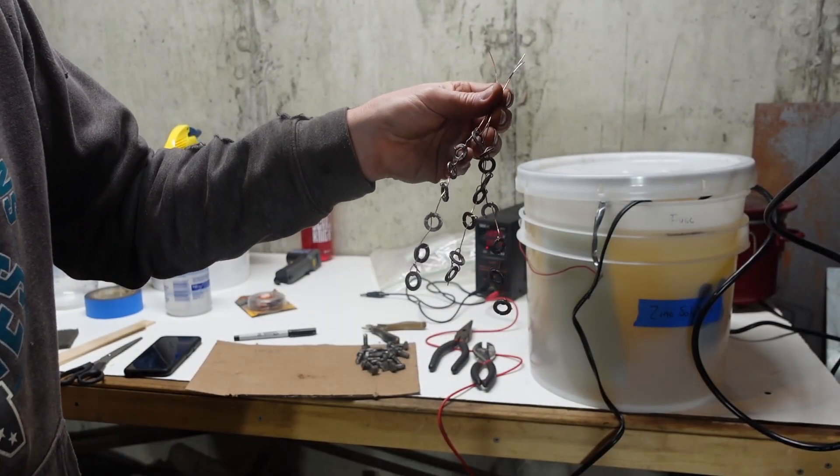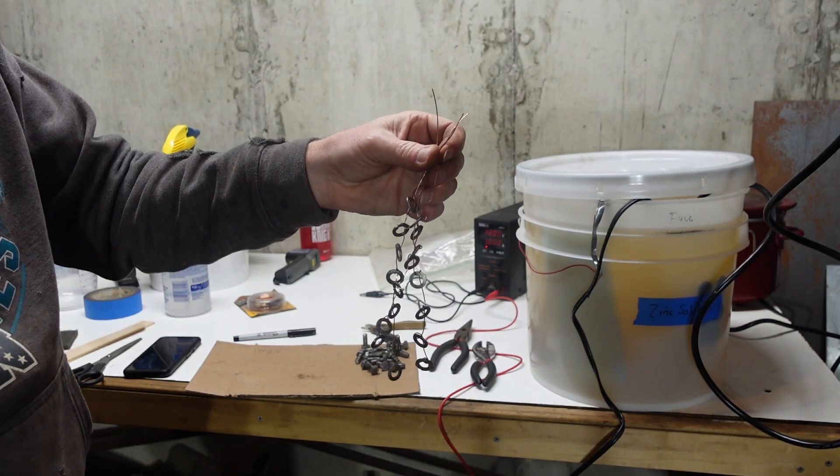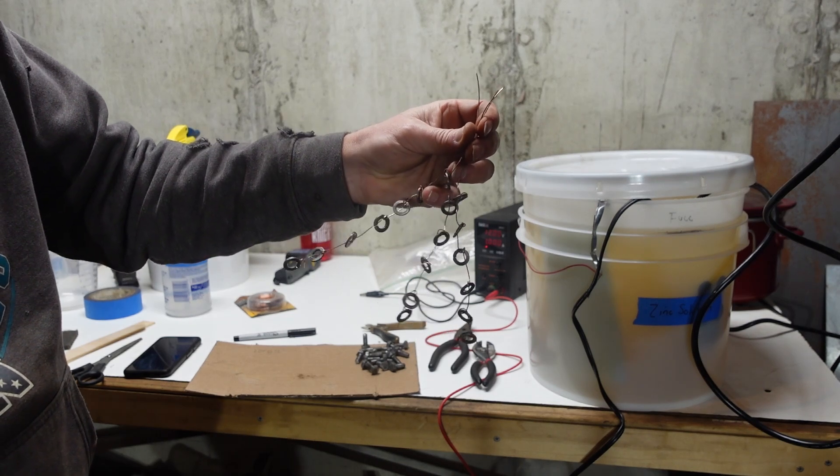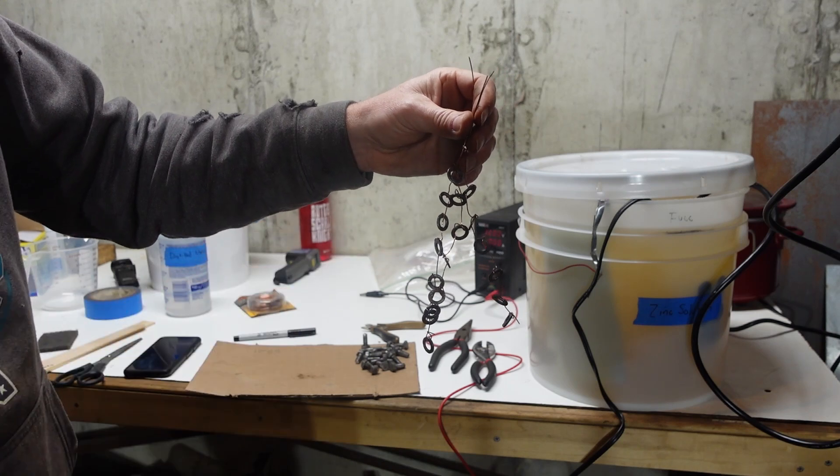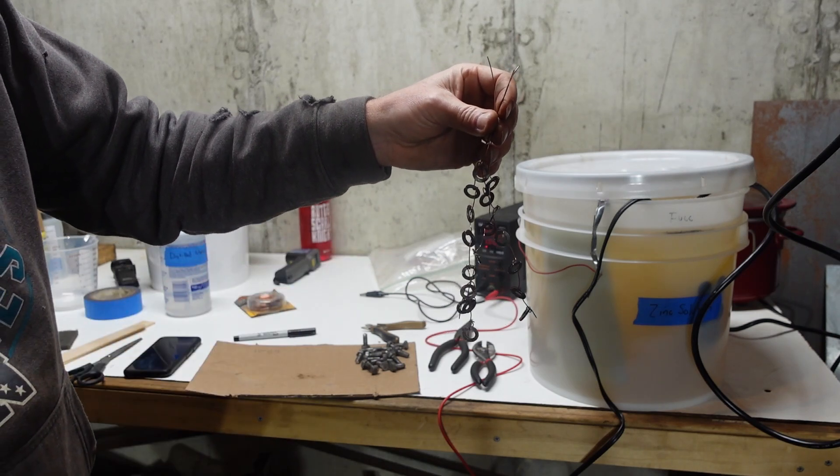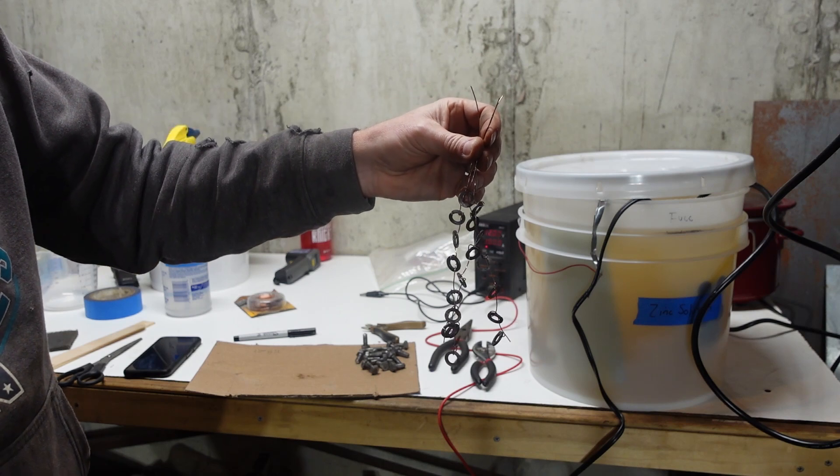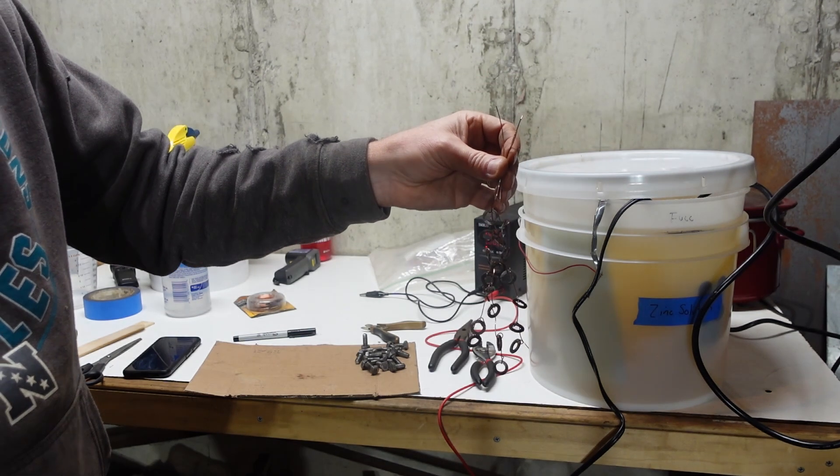Got all the lock washers here wired up on copper wire. I'm using a 20 gauge. It recommends a 10 or 12. So probably in the future, I'll go with a little bit heavier. Don't underestimate how long this takes. That took more time than I thought it would. So now I'm going to go ahead and dip these into the degreaser for five minutes.